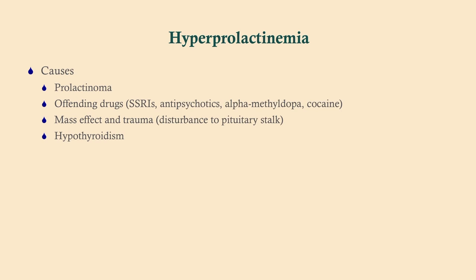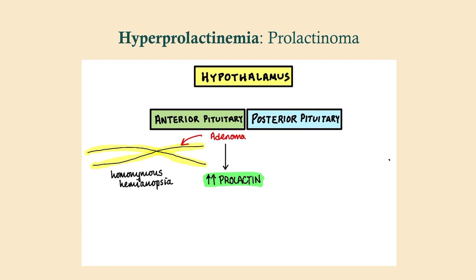Hyperprolactinemia has a variety of causes. The first one that probably jumps to mind is a prolactinoma, but there are others: offending drugs — the big one being antipsychotics — mass effect, trauma causing disturbance to the pituitary stalk or infundibulum, and hypothyroidism. To get visual symptoms such as compression of the optic chiasm in addition to high prolactin, you would need a fairly large prolactinoma.